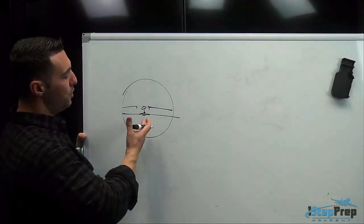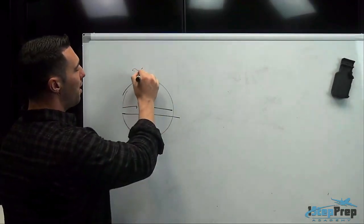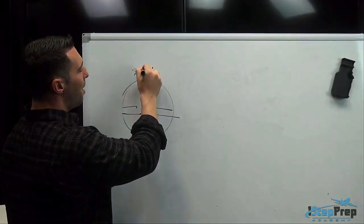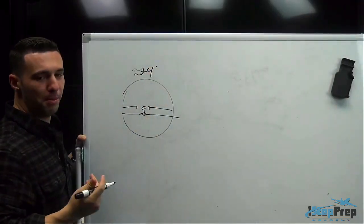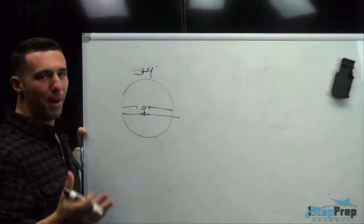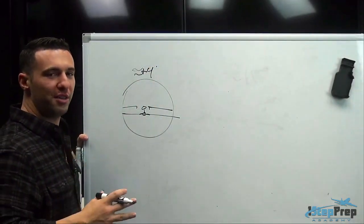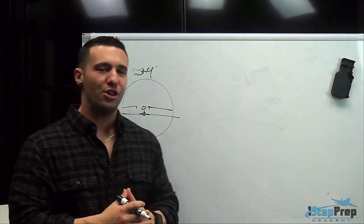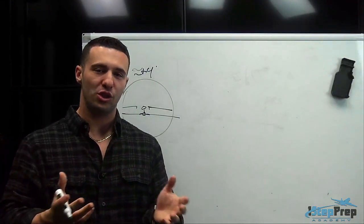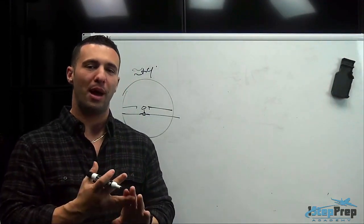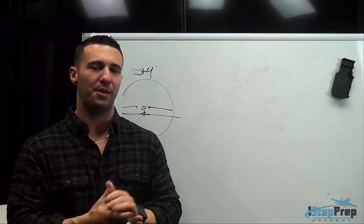Simply placing the flight path vector on the horizon is going to give you level flight. Now, even if you don't have that, putting the aircraft at an approximate positive four degrees nose up is going to be the trick in most swept-wing transport jets. I'm going to give you a lot of generalities in terms of numbers, power settings, and pitch settings.